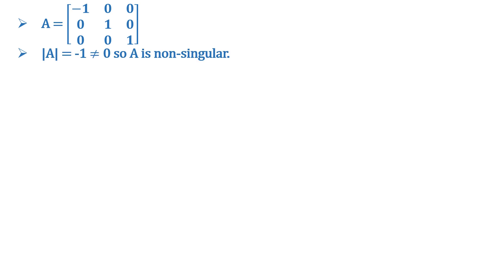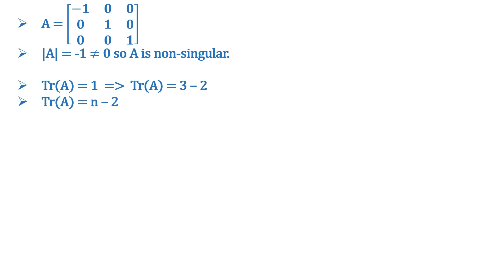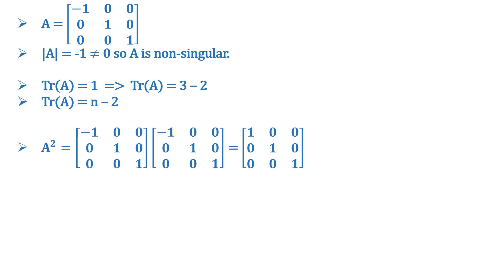Now, the determinant of A is -1, which is not equal to 0, so A is non-singular. Also, trace of A = 1 = 3 - 2 = n - 2. And A² = I, the identity matrix. Hence the correct answers are options B and D.